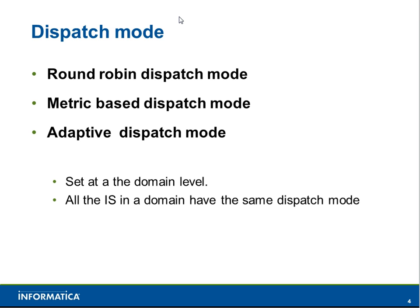If dispatching a job to a node would cause that node's max process task count to reach its threshold, it won't dispatch that task to that node — that is the only criteria for round robin. Metric-based dispatch mode is similar to round robin in dispatch fashion, but it also looks at the other two thresholds: CPU run queue length and max memory percentage. Adaptive dispatch mode, as the name suggests, is adaptive in nature — it finds the best suitable node before dispatching by performing all computations for all three thresholds, then dispatches the job accordingly. These dispatch modes are set at the domain level, which is why all Integration Services in a domain always share the same dispatch mode.